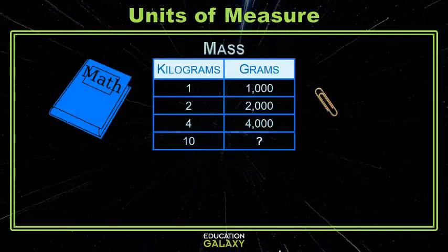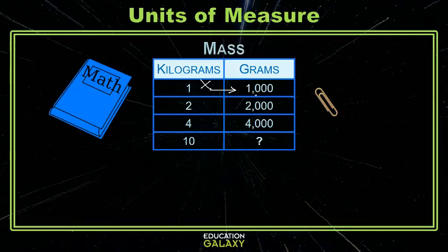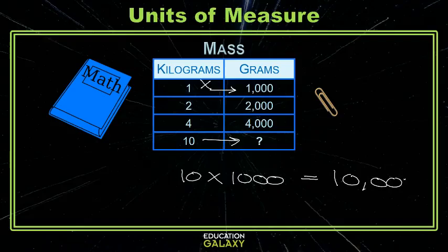Let's try converting with mass. Here we have mass in kilograms and grams. A paper clip is about a gram, and a textbook is about a kilogram. The textbook is heavier, so we're going from this bigger unit to this smaller unit. To do that, we're going to multiply. We're given that 1 kilogram is 1,000 grams, so we multiply 10 by 1,000, and that gives us 10,000.